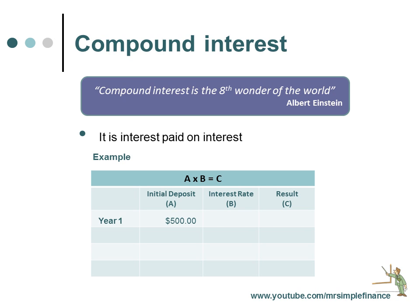If we look at the example here: if we had $500 as an initial deposit and we earned interest of 5% in the first year, we would have a capital sum of $525. If in year 2 we invested the interest, the capital would rise to $551.25.